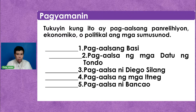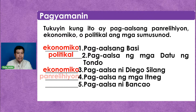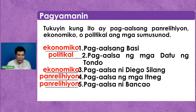Pag-yamanin — dumako tayo sa ating sunod na activity. Tukuyin kung ito ay pag-aalsang panrelihiyon, ekonomiko, o politikal. Number one: Pag-aalsang Basi — ekonomiko. Number two: pag-aalsa ng mga dato ng Tondo — politikal. Number three: pag-aalsa ni Diego Silang — ekonomiko. Number four: pag-aalsa ng mga Itneg — panrelihiyon. Number five: pag-aalsa ni Bangkao — panrelihiyon. Tama tayo, Prishaline, Jane, Alexa, Jezreel, Mark, Jose, Vic, Rubik — maraming maraming pong salamat.